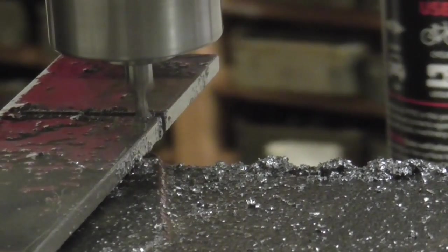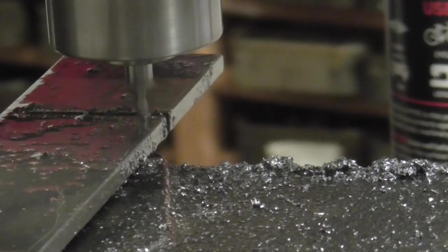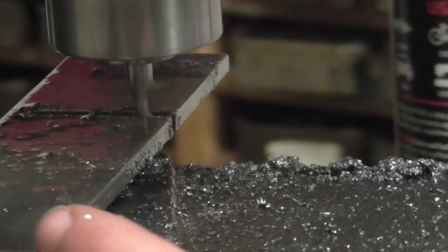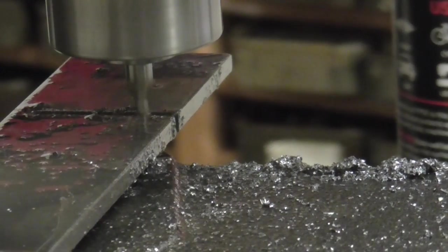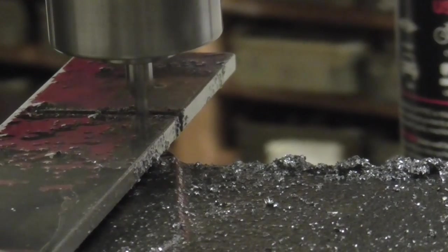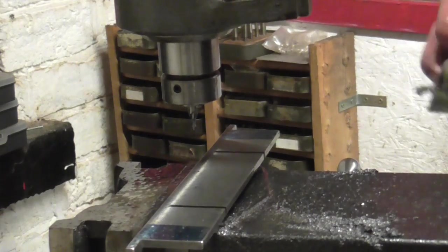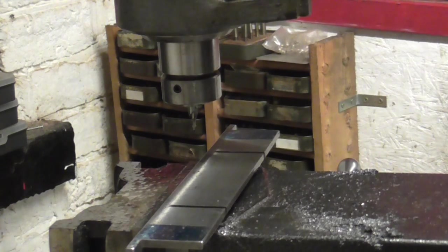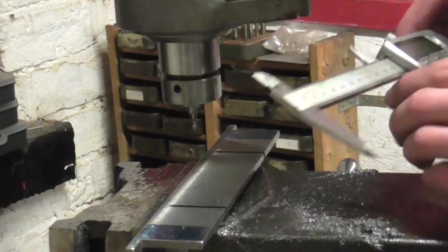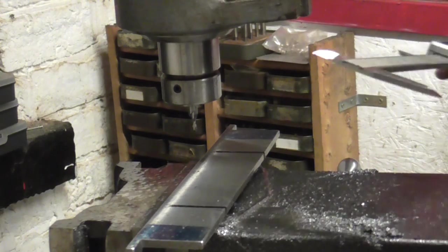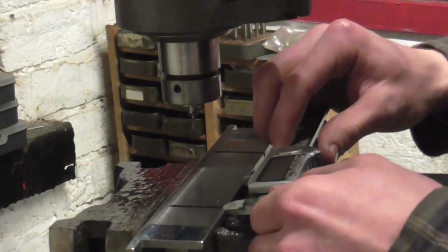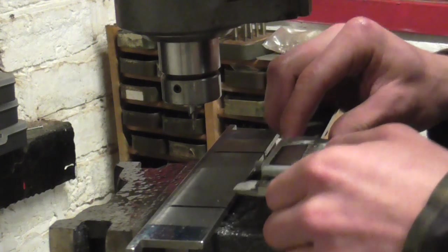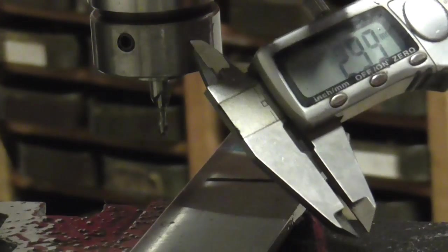This is the final pass now on the second slot. I've been going down with the tool 20 thou a time, or about half a mil. Measurement-wise these should be three mil. I know this one's okay—can't complain with that.